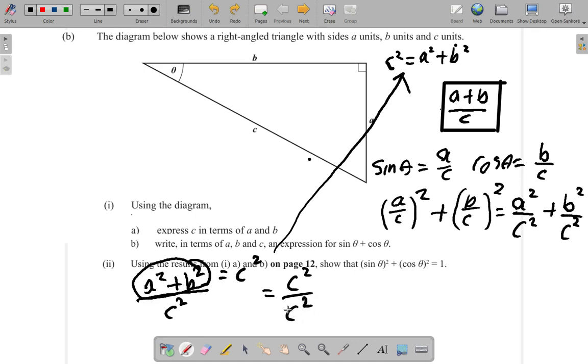But what is c²/c²? It has to be 1. A number divided by itself is 1. So therefore, what this is showing is that sin²θ + cos²θ = 1. Shown.